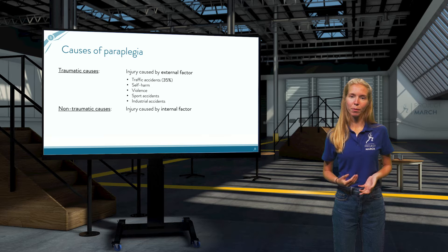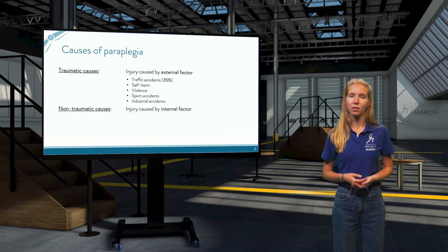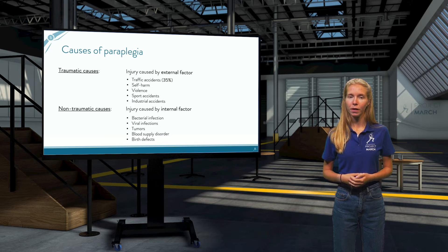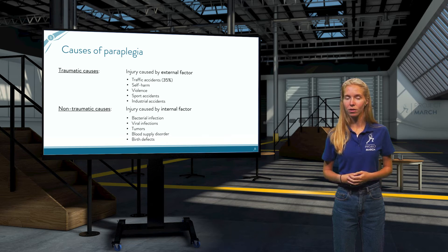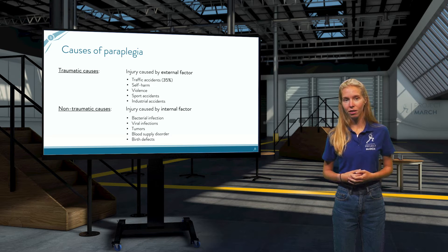Non-traumatic paraplegia points to an internal cause, and can arise as a result of either a virus or a bacterial infection, tumours pressing on the spinal cord, blood supply disorders, or in rare cases due to a birth defect.